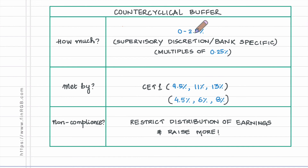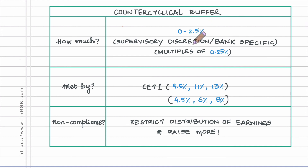It is not the case that all banks in the economy are subject to the same requirement — the counter cyclical buffer can be bank-specific and is set in multiples of 0.25 percent. If a bank is internationally active, the counter cyclical buffer it is subject to would be a weighted average of the counter cyclical buffers which apply to all the different regions and markets in which that bank operates.